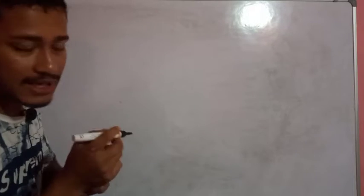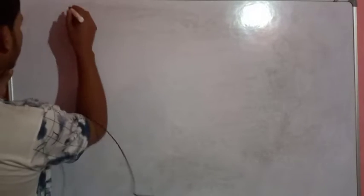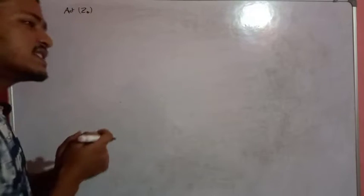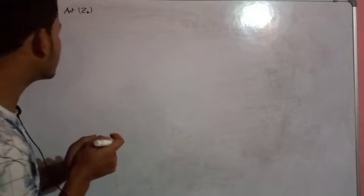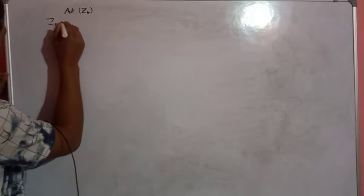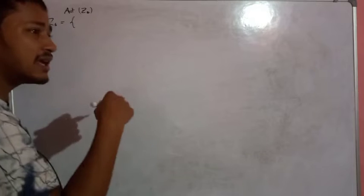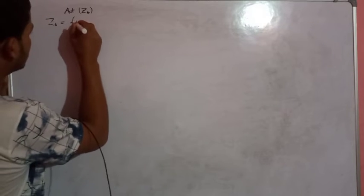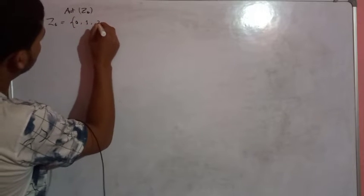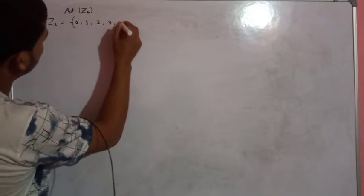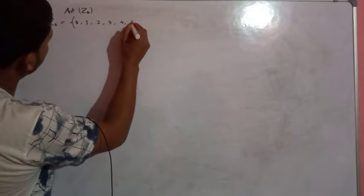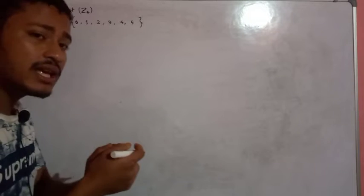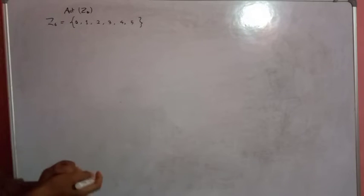So, what is an automorphism? Automorphism of Z6. What is Z6? Z6 is the group under addition modulo 6. That is, Z6 = {0, 1, 2, 3, 4, 5}. In general, Zn = {0, 1, ..., n-1}. So this is the group Z6.